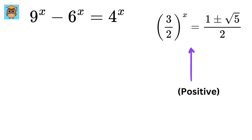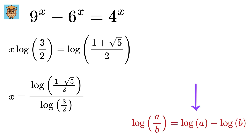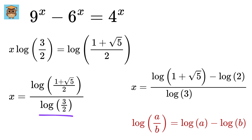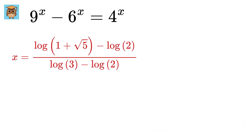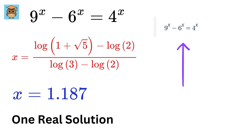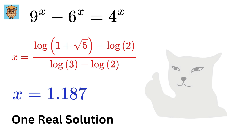Now consider this equation. Again, take log on both sides to get x times log 3 by 2 equals log of this. So x equals this over this. Now using this property of log, it will become log of 1 plus root 5 minus log 2, and this will be log of 3 minus log of 2. Now you can leave your answer like this, or find its decimal value, which turns out to be 1.187. From the graph, we saw that there was only one intersecting point and it was nearly 1.2, and it turns out to be the same. We also proved that we only get one real solution. Finally, when we put this equation in an online calculator, we get the exact same result. Isn't that cool?